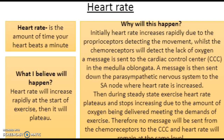Heart rate during steady state exercise: heart rate is the amount of times your heart beats per minute. I believe heart rate will increase rapidly at the start of exercise, then it will plateau. Initially, heart rate increases rapidly due to the proprioceptors detecting movement, whilst the chemoreceptors detect the lack of oxygen. A message is sent to the cardiac control centre (CCC) in the medulla oblongata, and a message is then sent down the sympathetic nervous system to the SA node where heart rate is increased.